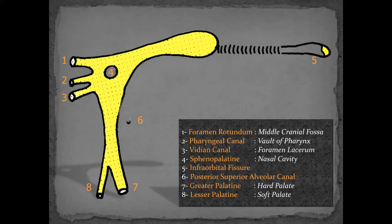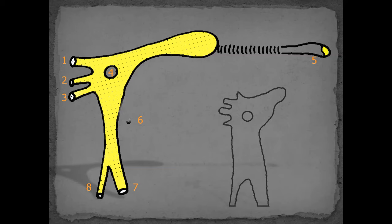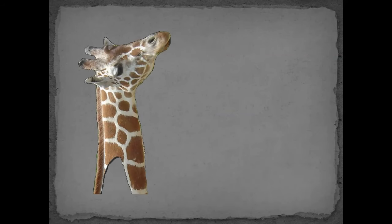This is from an anatomist in Canada who used to give lectures on the pterygopalatine fossa with these drawings. Looking from the right side: number five is the infraorbital fissure; in the back we have foramen rotundum, Vidian, and the pharyngeal canal; number four medially is the sphenopalatine foramen; the pterygomaxillary fissure; and six, seven, eight are the three inferior openings — greater palatine, lesser palatine, and the posterior superior alveolar nerve. And this is my trademark 'giraffe' picture — it's exactly as envisioned in these diagrams.